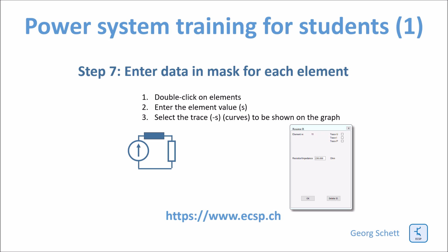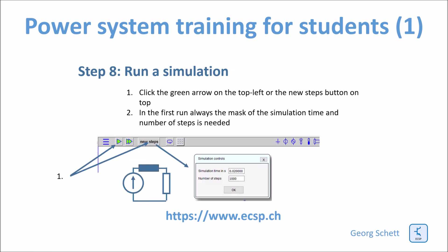Once the circuit is okay, you can input the data in the data mask by double-clicking on all the elements — the mask appears and you enter the data. Now our circuit is ready and we want to see traces and have a run. There are two options. Either you click on the green arrow and the simulation runs. However, for the first run you must always input data into the simulation controls. You can directly push the new step mask where you input the simulation time in seconds — in this case 20 milliseconds — and the number of steps for the whole simulation time. Then push OK and the simulation runs.